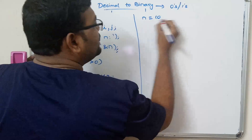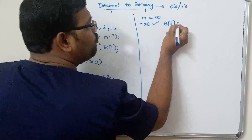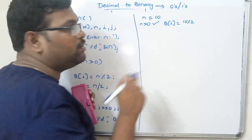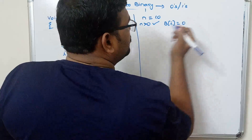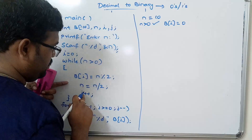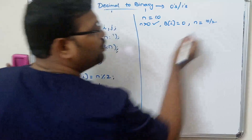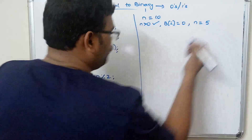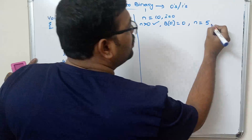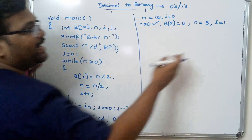n = 10, which is greater than 0, so the condition is true. b[i] = 10 mod 2 = 0, so b[0] = 0. Then n = 10 / 2 = 5, and i++ makes i = 1. That completes the first iteration.